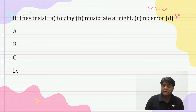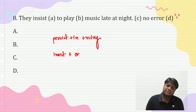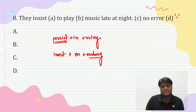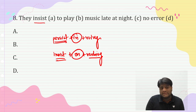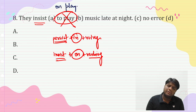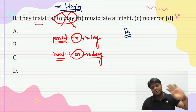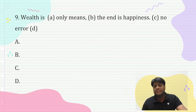'They insist to play music at night.' Remember: 'persist' is followed by 'in' plus verb+ing, and 'insist' is followed by 'on' plus verb+ing. Here, 'to play' after 'insist' is wrong; it should be 'insist on playing'. Answer is clearly B part.